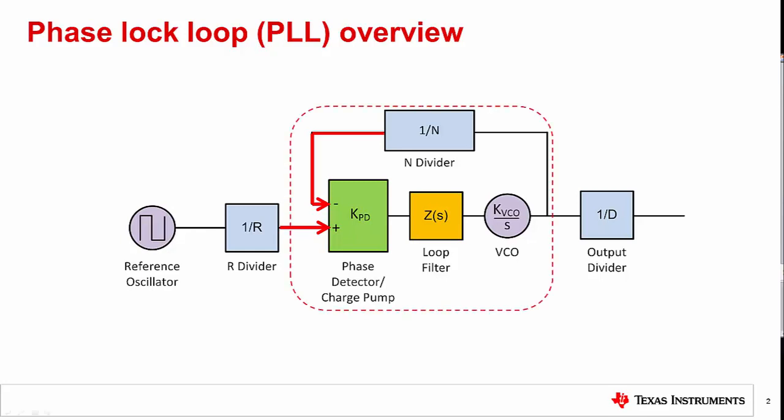As discussed in the previous training, the PLL loop bandwidth is not set by the lowpass filter alone. Changing any of these parameters — KVCO, KPD, and N — also influences the closed loop bandwidth. From the basic PLL structure, we can define some fundamental transfer functions and notation to help with understanding phase noise.